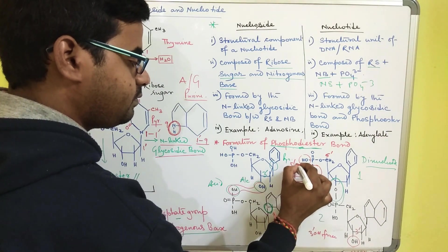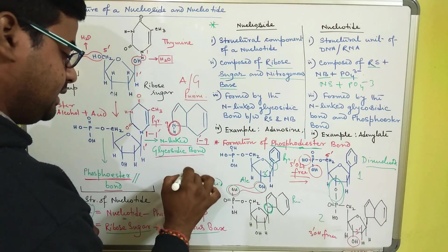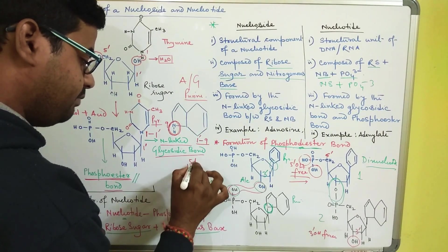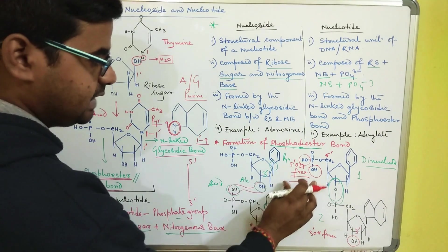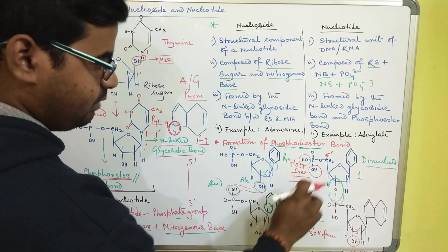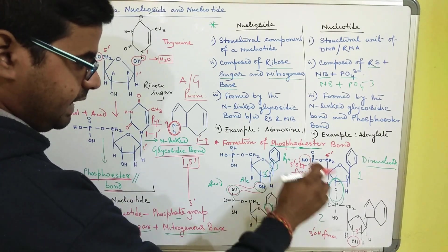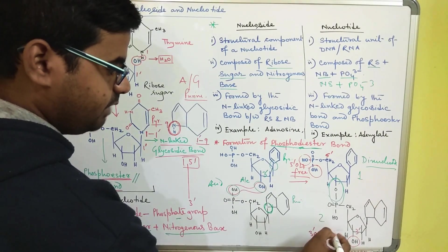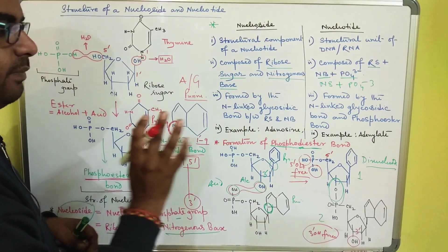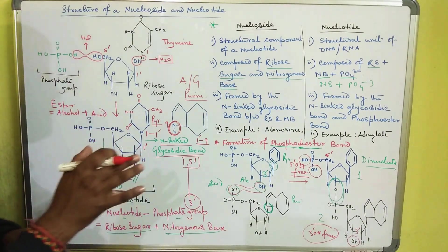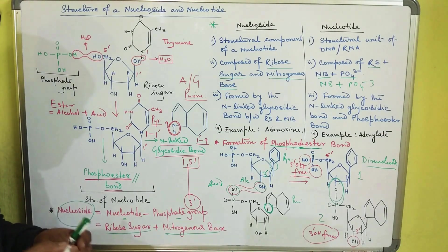So a polynucleotide chain is designated as having a five prime end and a three prime end. The five prime end has a free five prime OH group, and the three prime end has a free three prime OH group. That is why DNA is designated as running in the five prime to three prime direction.